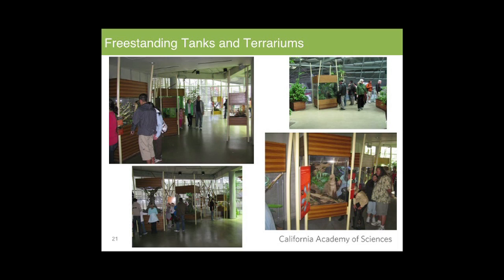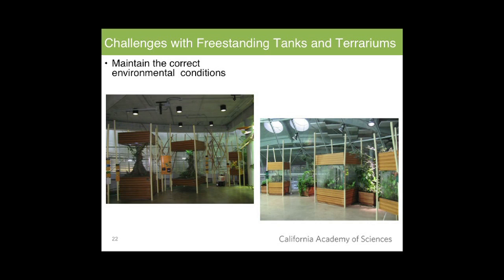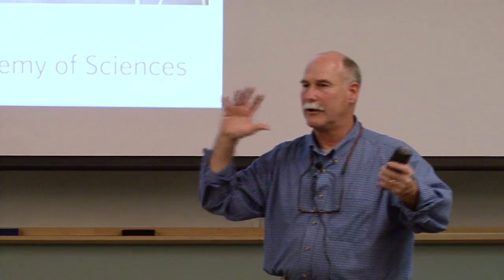We also have freestanding tanks and terrariums at each level housing various herps and invertebrates. The challenge of maintaining correct environmental conditions remains: the original goal was that the bola's controlled environment would regulate each tank, which largely works, but we still need to fine-tune individual tanks. Because of the residual vertical stratification, it's still too warm at the Costa Rica level, so our focus there is lowering temperature using increased misting, water features, and shade cloths from the sun.